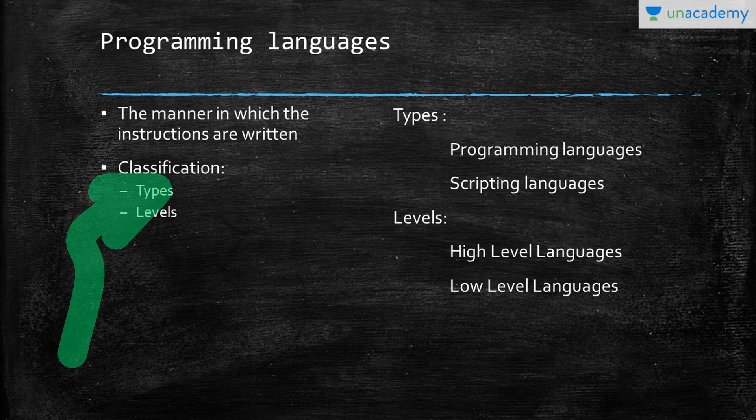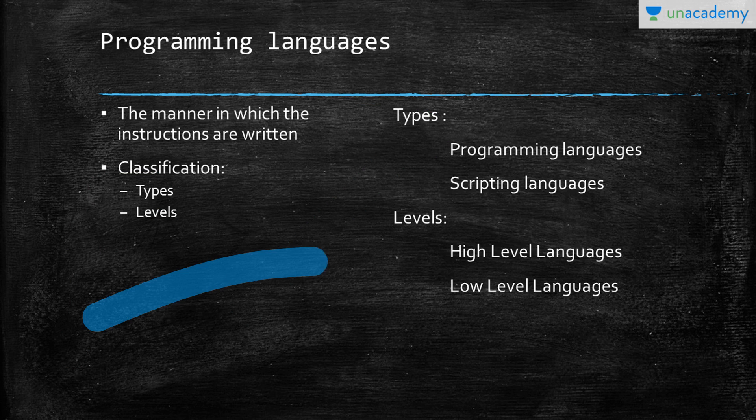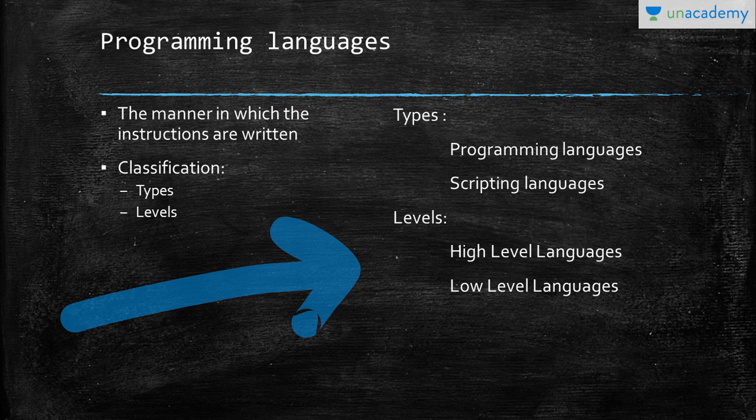What are types and levels? Types are like the programming languages which are made to do more preferably a certain kind of task. For example, on the basic classification there will be programming languages and scripting languages. Levels are the ones which have developed over years.